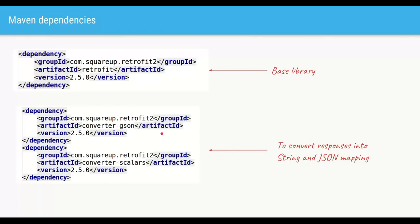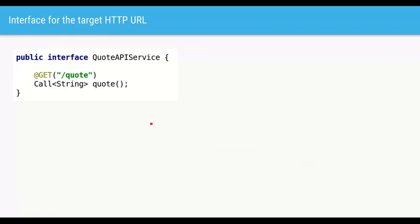Our job is to make this HTTP call from within our own service. The first step is to add the required libraries in our pom.xml. Then the first main step is to create an interface — this interface represents what paths are available on the target service we want to hit. Our Quote Service has one path, slash quote, and we'll use it with the @GET annotation, which tells Retrofit to make GET calls instead of POST calls. The return type is always the Retrofit class Call, typed to what we expect from the response — in our case, Call of type String.